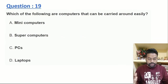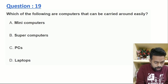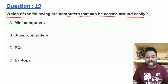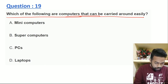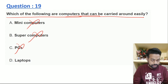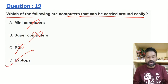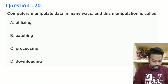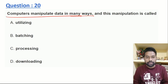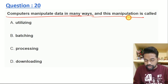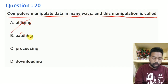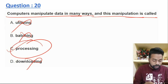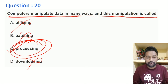The next question: which of the following are computers that can be carried around easily? The computers are carried around easily — that's right, it's not a mini-computer, super-computer, or PC. The laptop can easily carry out. Computers manipulate data — the computer has many different ways to manipulate data. The manipulation is a processing operation. Downloading means we receive from the internet — so we have to do the processing. The computer manipulates data through processing.